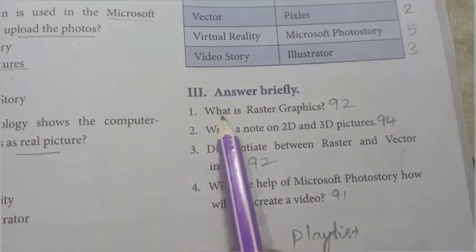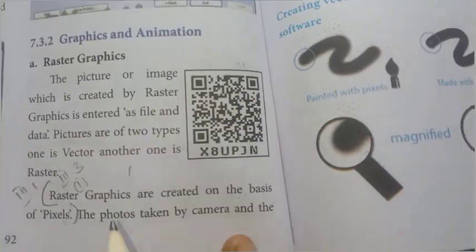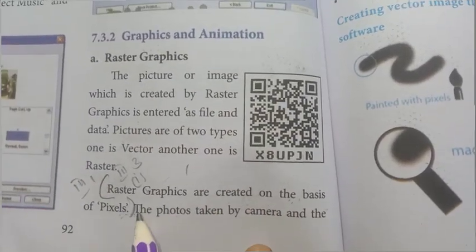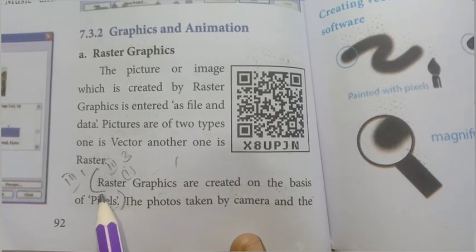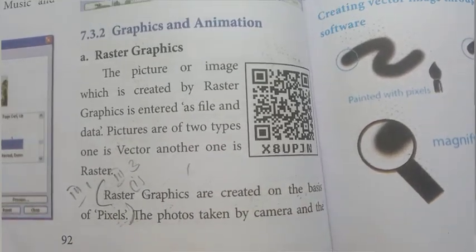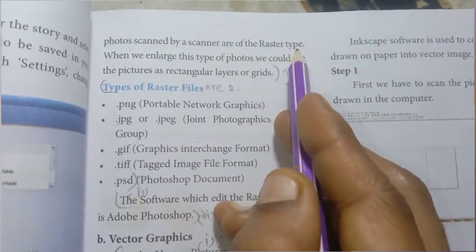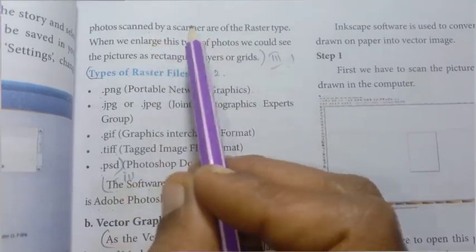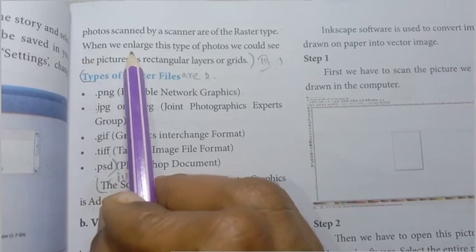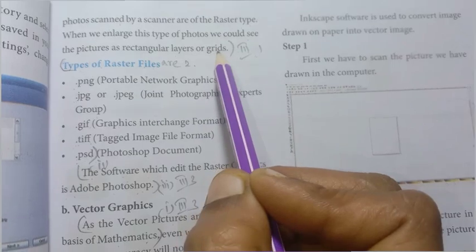Answer briefly. First one: what is raster graphics? Page number 92. Raster graphics are created on the basis of pixels. Raster graphics are created on the basis of pixels. Photos taken by camera and photos scanned by a scanner are of the raster type. When we enlarge this type of photos, we could see the picture as rectangular layers or grid.